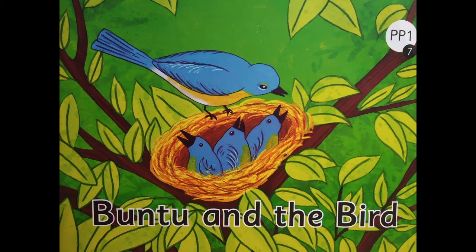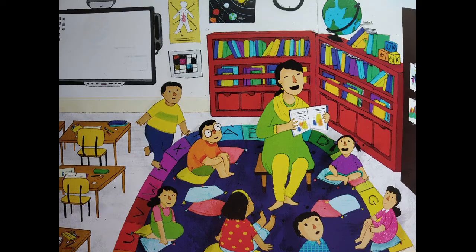Now let's turn to the first page. Look at this picture very carefully. My first question: who are the people in this picture? I feel there is a teacher and there are children. Where do you think they are? Look at the room, the setting, and the objects in this room, and then answer where you think they are. I feel they are sitting in the class.